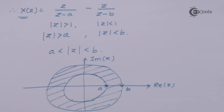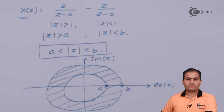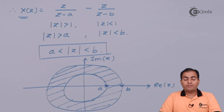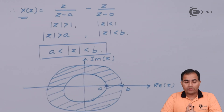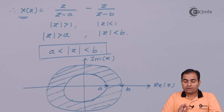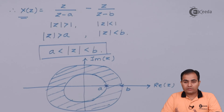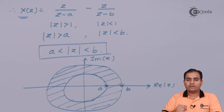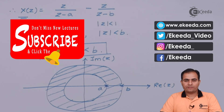This is the Z transform and ROC of the given function. An important suggestion: go through all the properties derived so far. If the question is worth 5 marks, use properties directly. If it is worth 10 marks, apply the Z transform on both sides properly and then solve. Thank you for watching — stay tuned with Ikeda.